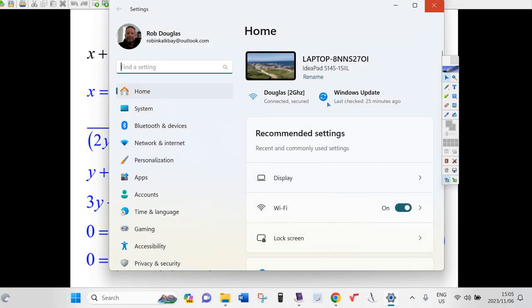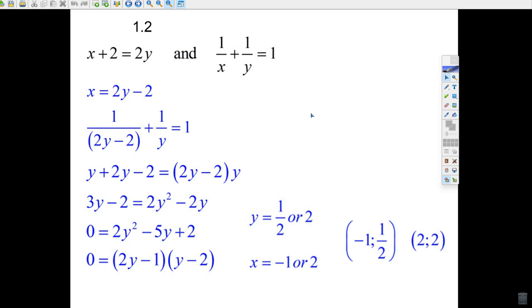Okay, this is the simultaneous equation in paper 1, so let's just try it. We have a linear equation, x plus 2 equals 2y, and then this fraction equation, 1 over x plus 1 over y equals 1.